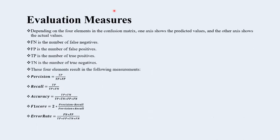Evaluation measures. Depending on the four elements in the confusion matrix — false negative (FN), false positive (FP), true negative (TN), and true positive (TP) — these four elements result in the following measurements: precision, recall, accuracy, F1 score, and error rate.